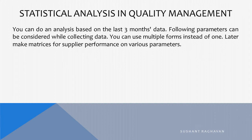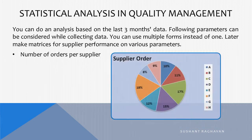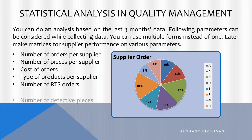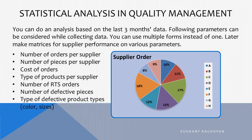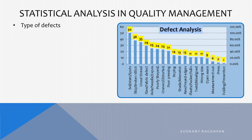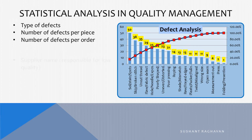You can do an analysis based on the last three months of data. The following parameters can be considered while collecting data: you can use multiple forms instead of one, then make matrices for supply performance on various parameters — number of orders per supplier, number of pieces per supplier, cost of orders, type of products per supplier, number of RTS orders, number of defective pieces, type of defective product types, color and sizes, types of defects, defect analysis, number of defects per piece, and number of defects per order.